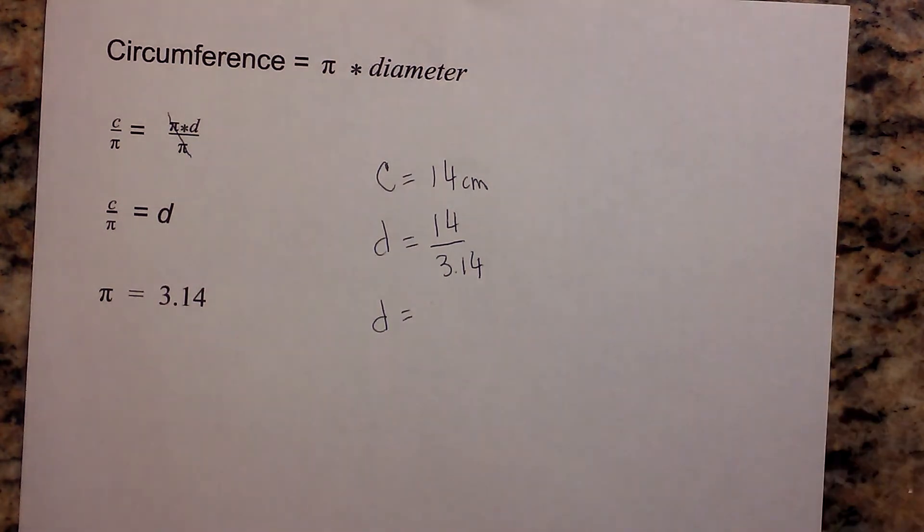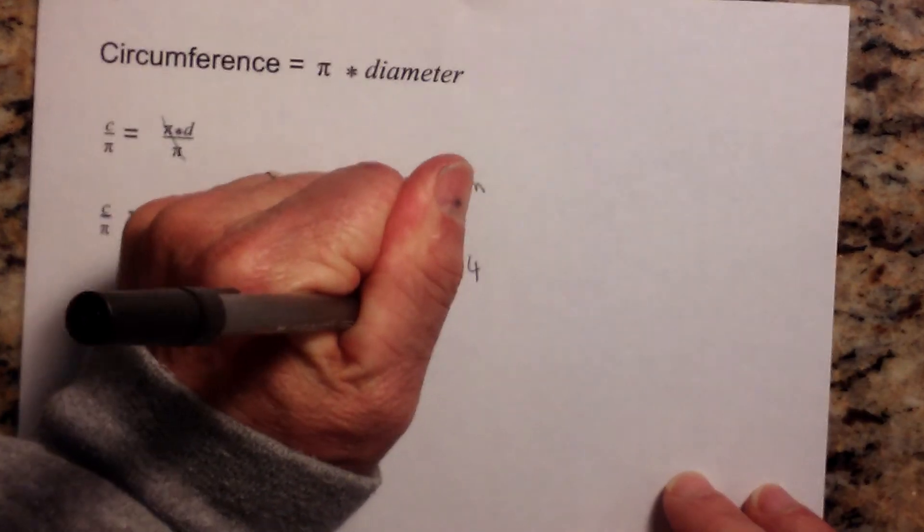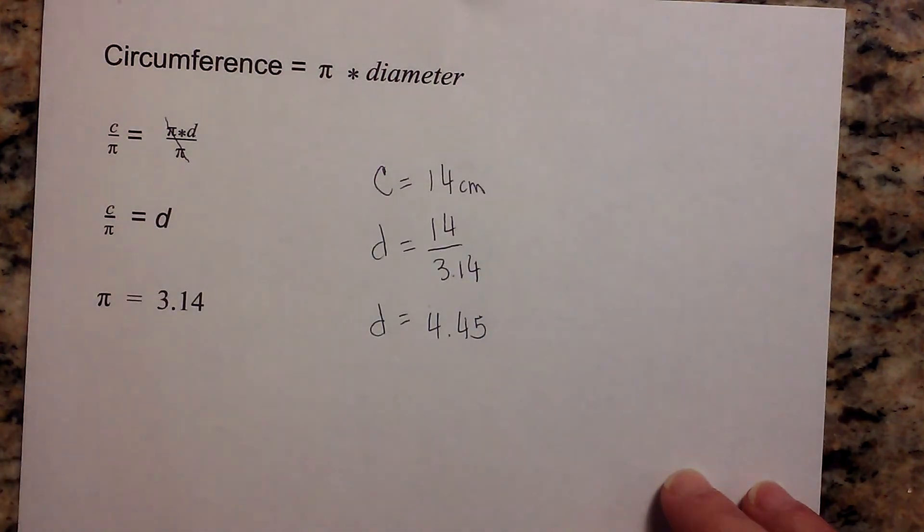And when we do the math, the diameter across the golf ball here is equal to 4.45 centimeters.